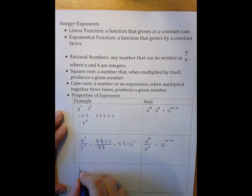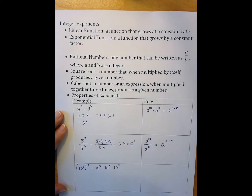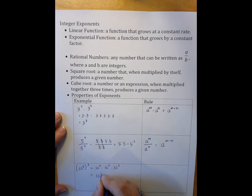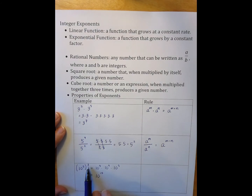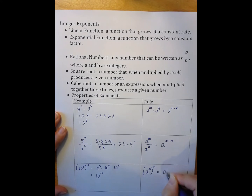Our next example is 10 to the 5th to the power of 3. That means 10 to the 5th times 10 to the 5th times 10 to the 5th. Since the bases are all 10, we add the exponents: 5 plus 5 plus 5 gives 10 to the 15th. Looking back, we got 15 by multiplying 3 and 5. So a to the m, all raised to the n power, equals a to the mn — we multiply the exponents.